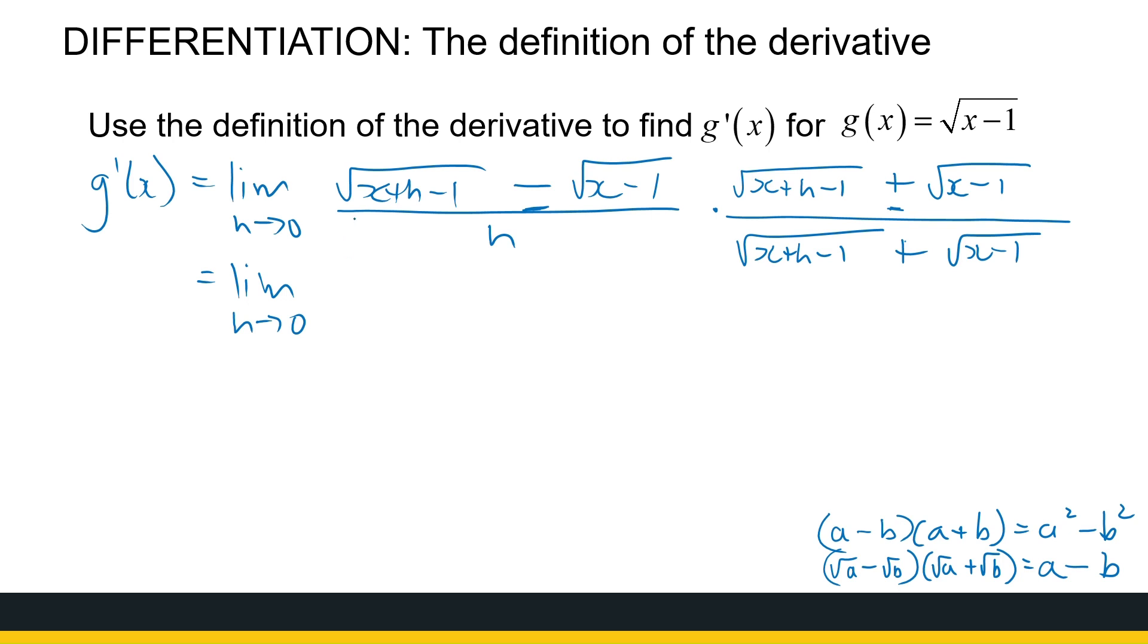Then I will get root of x plus h minus 1 times root of x plus h minus 1 gives me x plus h minus 1. We don't need the brackets. I'm just putting it there. Minus root of x minus 1 times root of x minus 1 is just x minus 1. We need those brackets because it's two terms after the minus divided by h times that whole fraction.